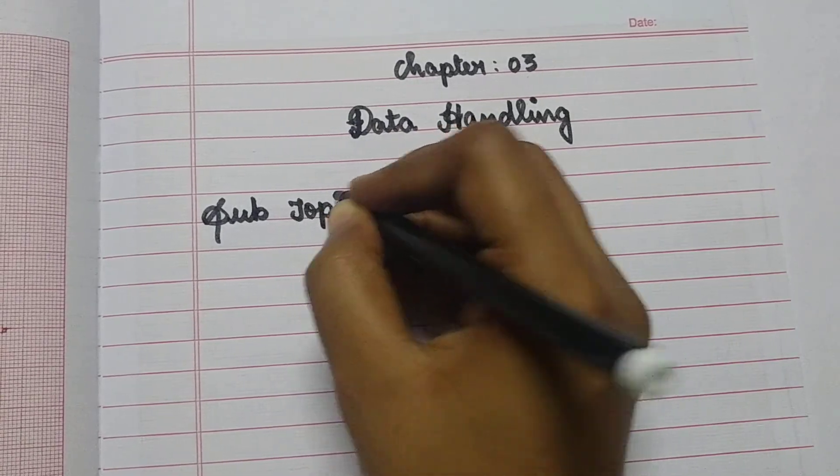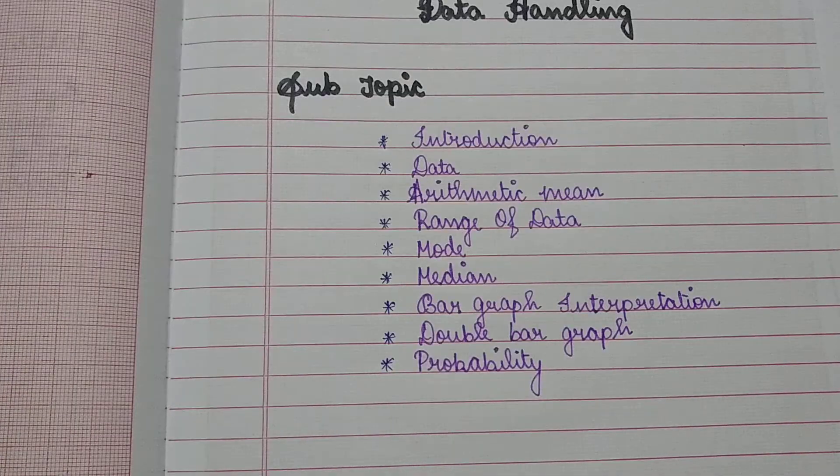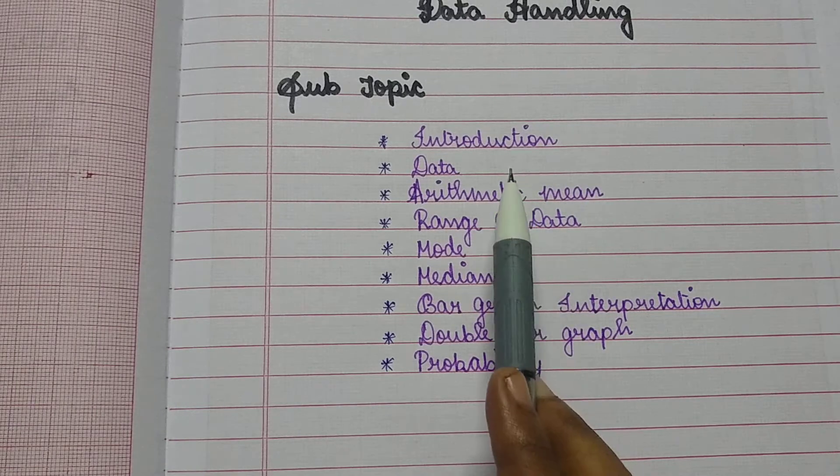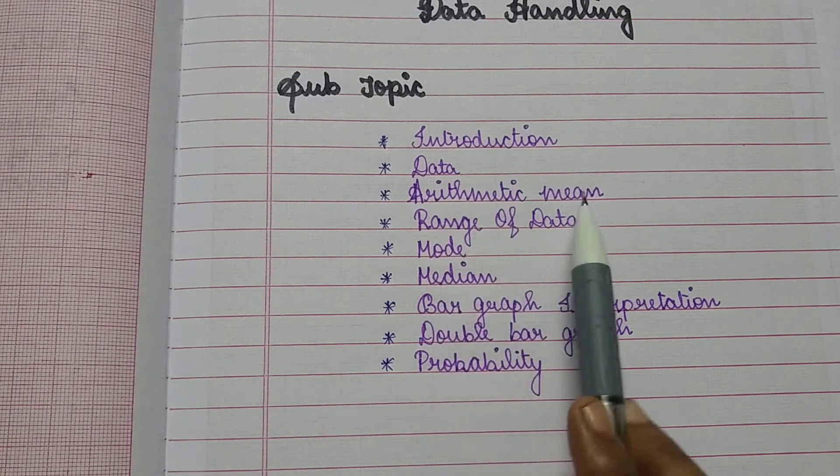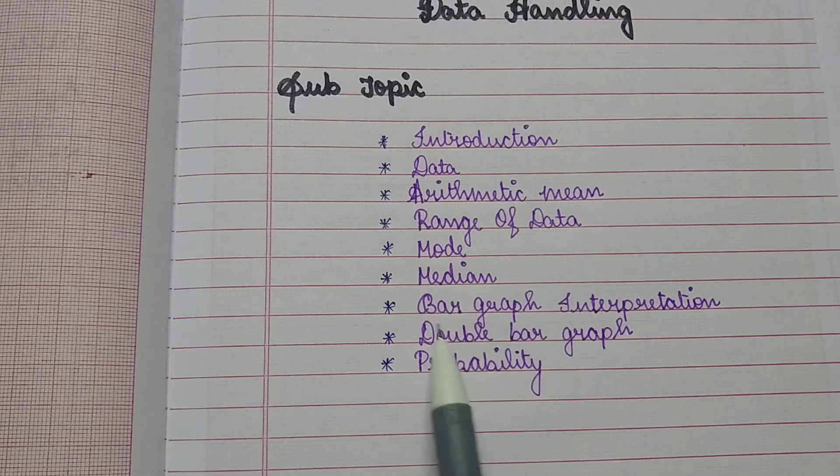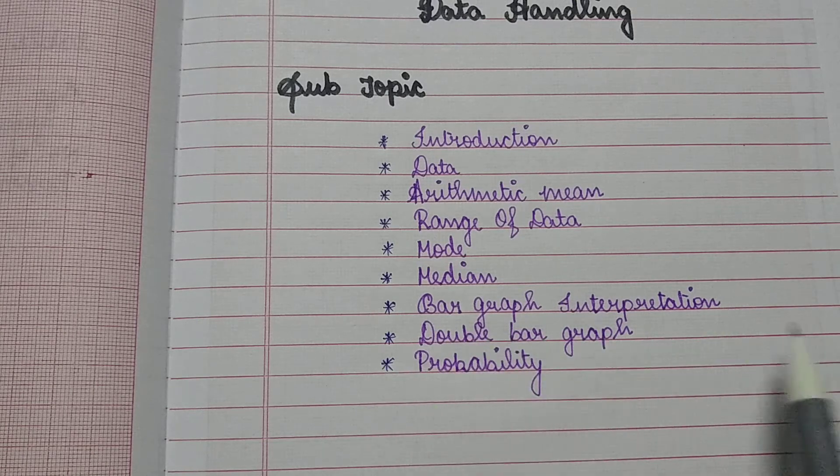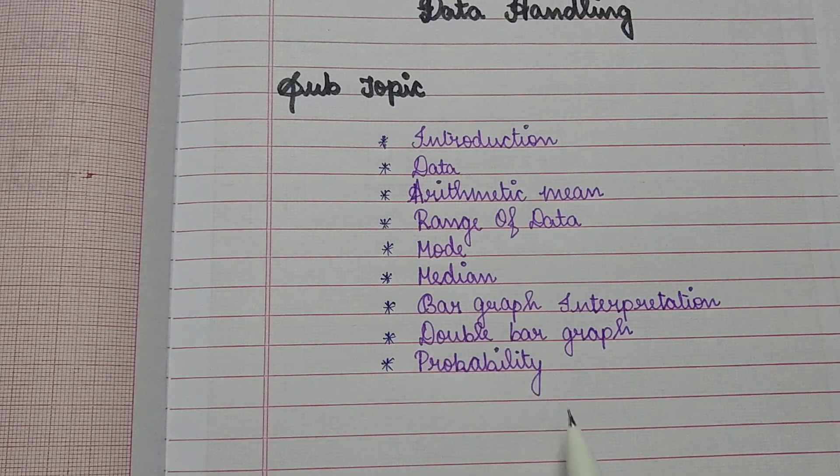Subtopics to be covered in this chapter are: introduction, data, arithmetic mean, range of data, mode, median, bar graph interpretation (single bar graph and double bar graph), and probability.